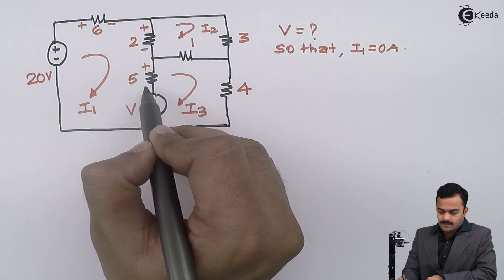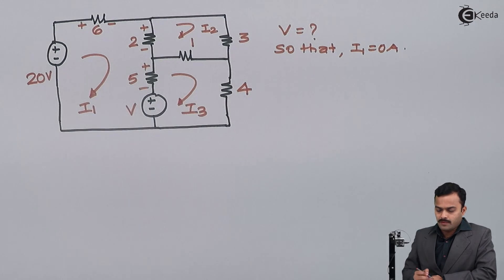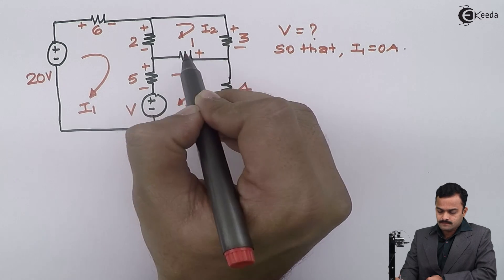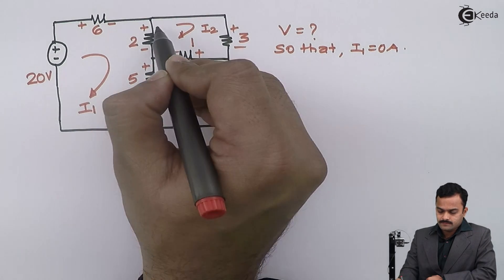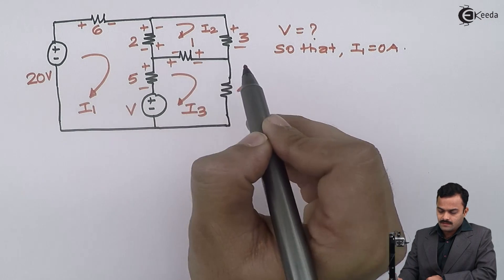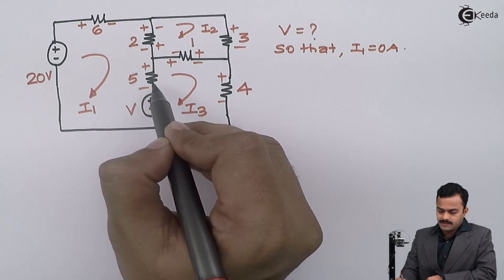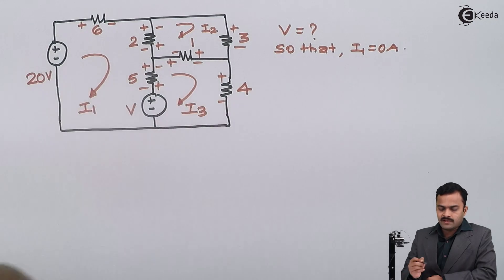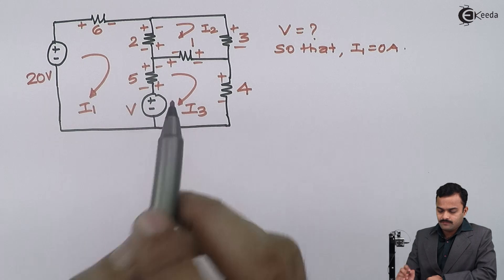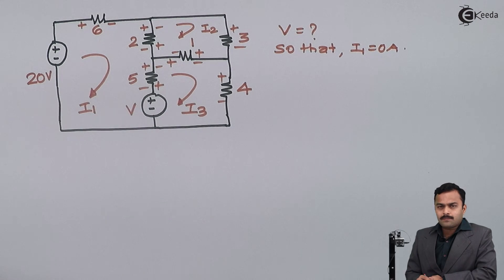Plus minus, plus minus for loop number 1. For loop number 2, plus minus, plus minus, plus minus. Loop number 3 like this. Batteries will have the polarities as they have given: plus minus, plus minus. So let's apply KVL.